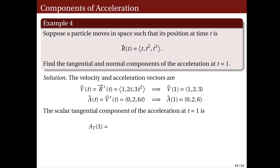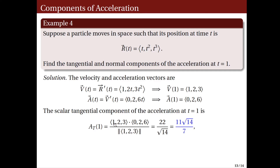We are now ready to compute the normal and tangential components of acceleration at t equals 1. The tangential component a sub T evaluated at 1 equals the dot product of V(1) and A(1) over the norm of V(1). That is the dot product of (1, 2, 3) and (0, 2, 6) over the norm of (1, 2, 3), which equals 1·0 plus 2·2 plus 3·6 equals 22, over the square root of 1 squared plus 2 squared plus 3 squared equals the square root of 14. Simplifying, the tangential component at t equals 1 is 11 times the square root of 14 over 7.